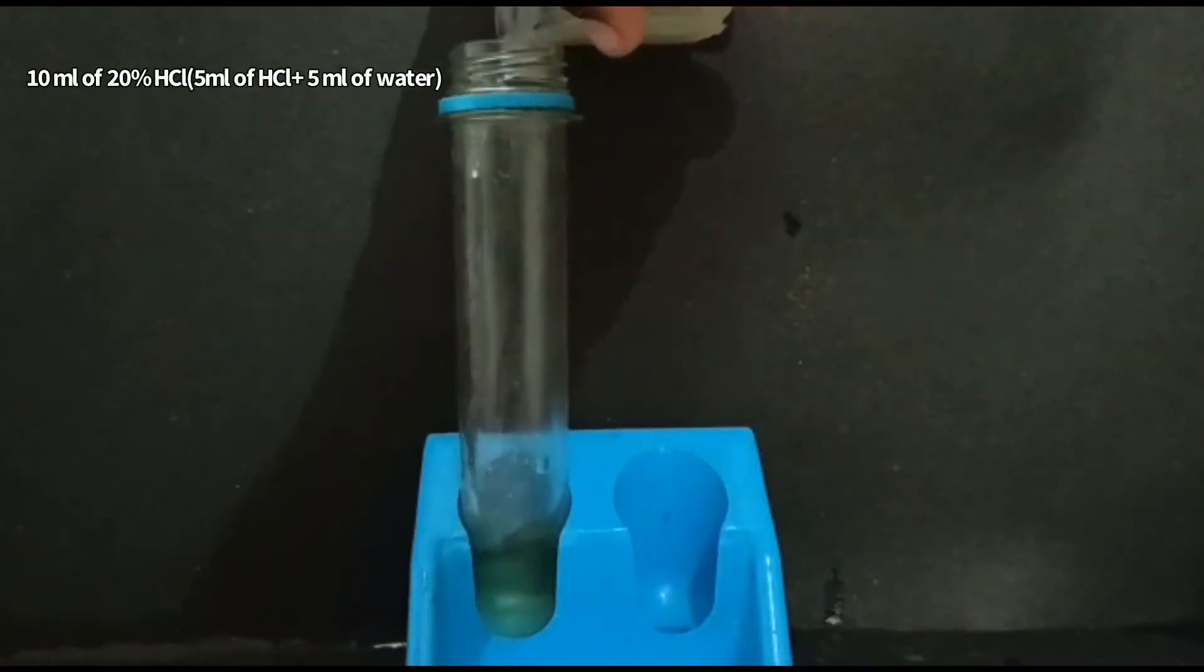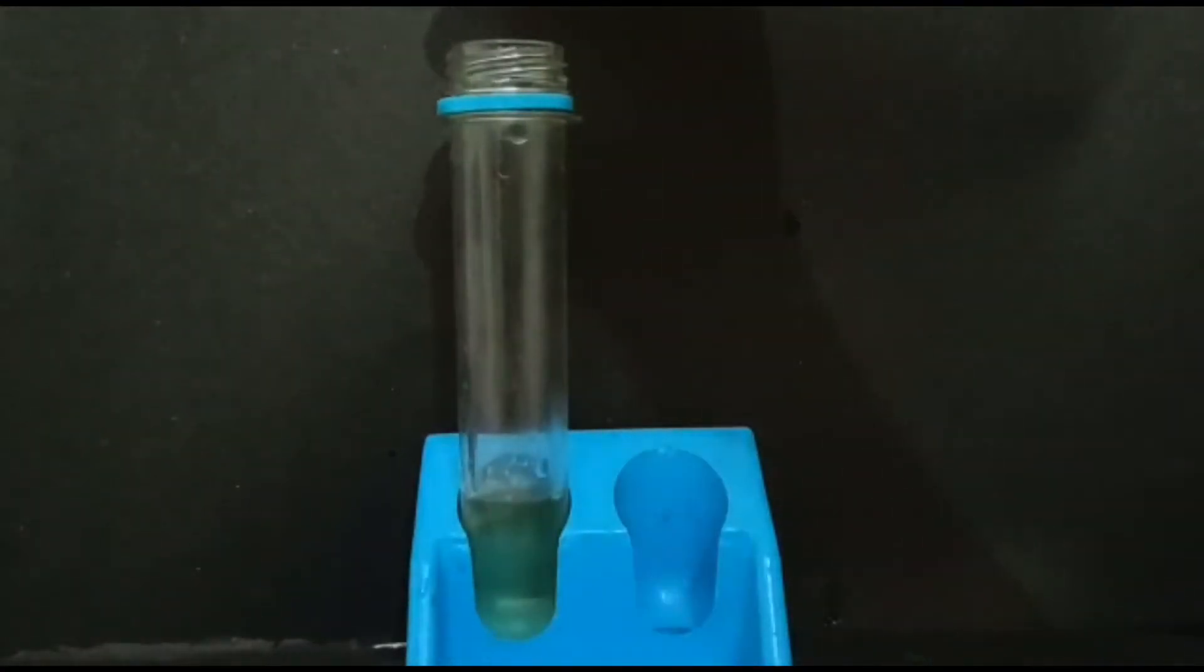To a test tube add 10 ml of dilute 20% hydrochloric acid. After the acid is added, add 2 grams of iron.